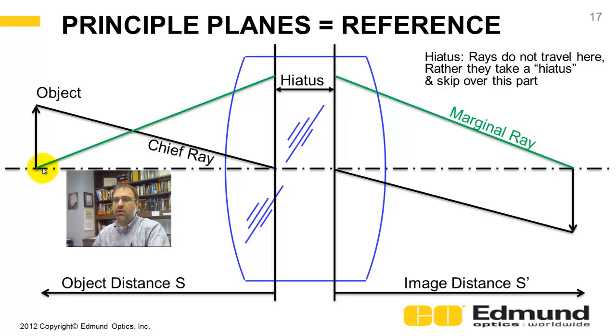For instance, let's take this marginal ray. Marginal ray starts at the object, goes to the edge of the aperture stop, we'll just assume the lens is the aperture stop. It is going to go to the edge of the principal plane here.